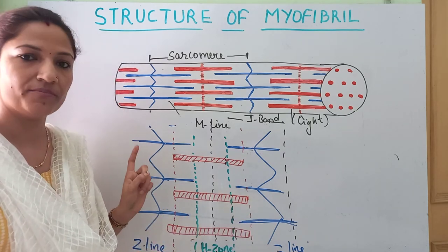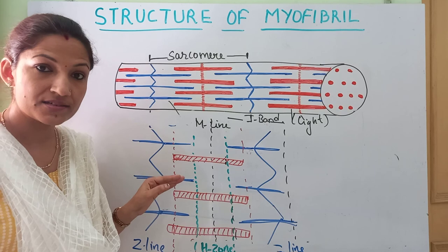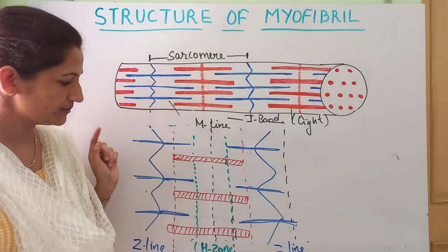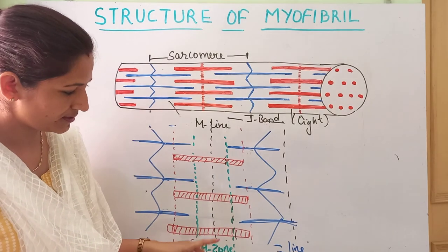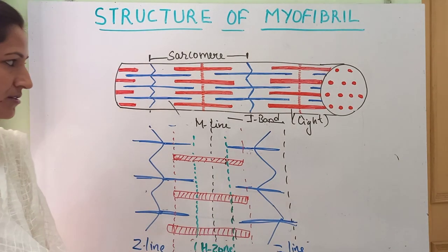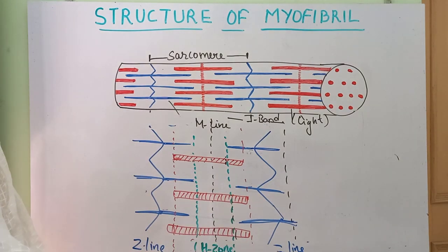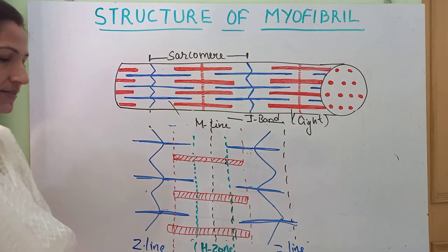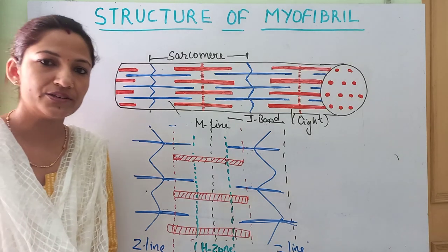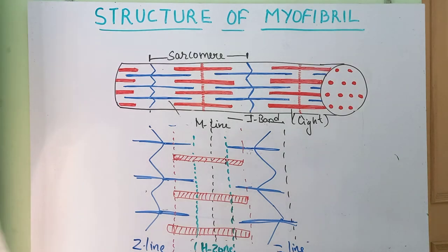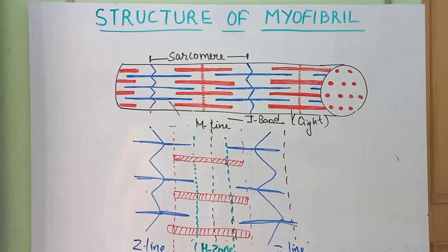To give a quick recap: I band will form the light bands, and A band will form the dark bands. Thank you.